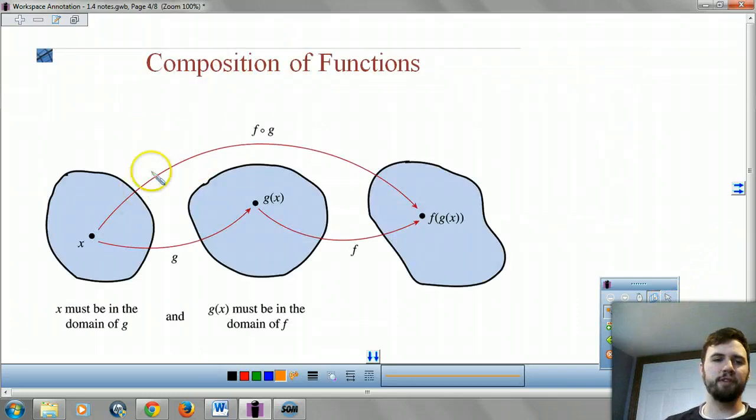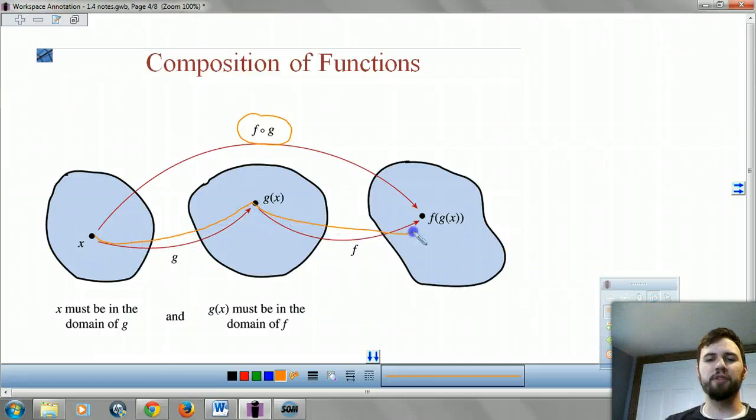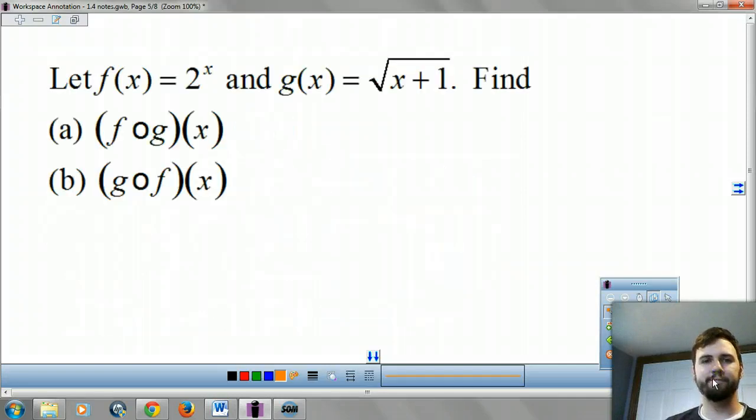Here's a map of what it looks like. Your f composed with g, the fog. If you go from x to g of x, and then from g of x to f of x, or take f of g of x, the same thing as the composition composed with. That's what that little circle means.